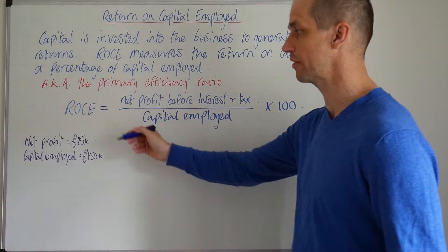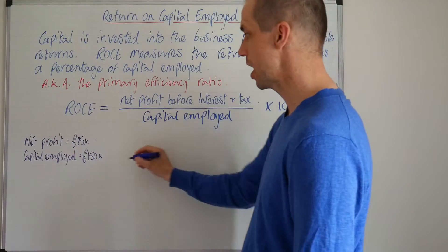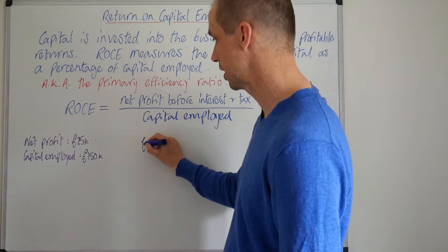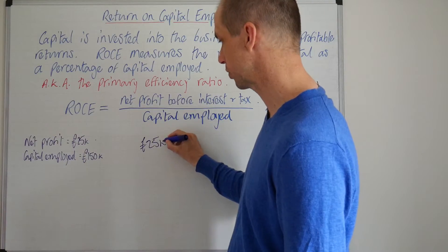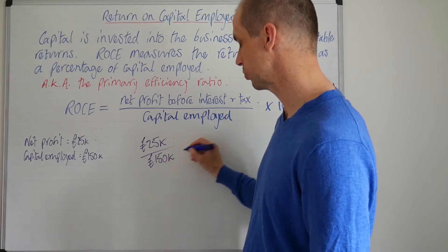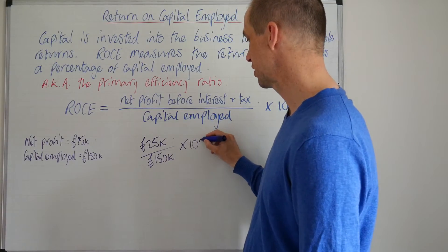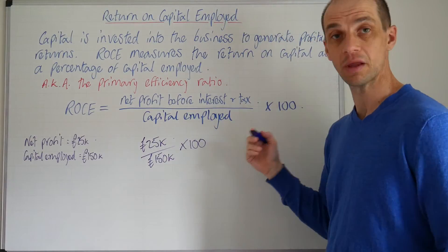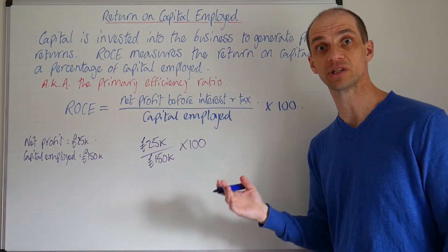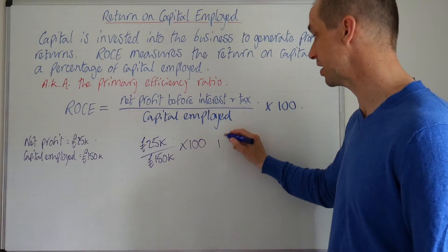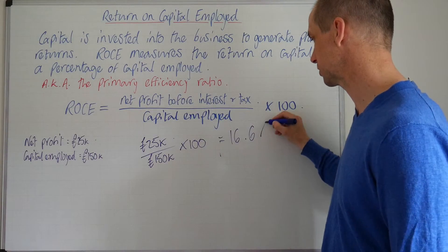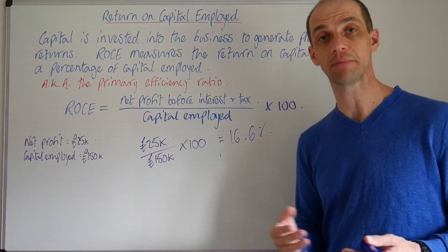We've got a straightforward example to consider. We have net profit of £25,000, divided by capital employed of £150,000, then multiplied by 100. That gives us a return on capital employed of 16.6%.